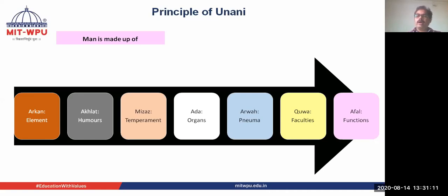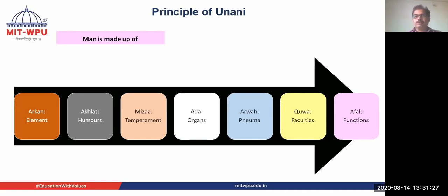So there are four elements. These elements are transformed into humors, and humors produce the subtle and the gross components. The subtle components form the Ru or Arva, whereas the gross components form Adha, meaning organs. Depending upon the dominance of humor, the Mizaj or temperament of a person is different, and faculties and functions are related with the Ru and Arkan.